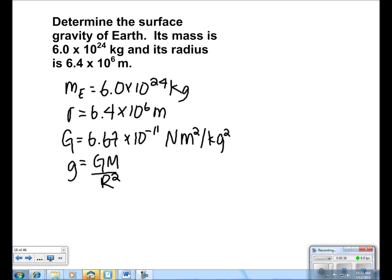We plug in the numbers to get 6.67 times 10 to the negative 11 times 6 times 10 to the 24 over 6.4 times 10 to the 6 squared.